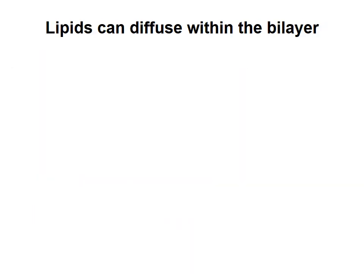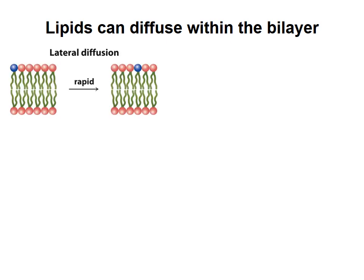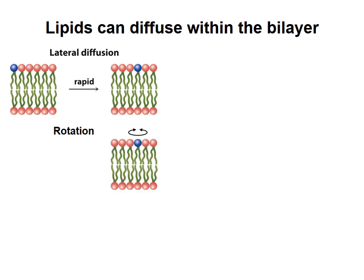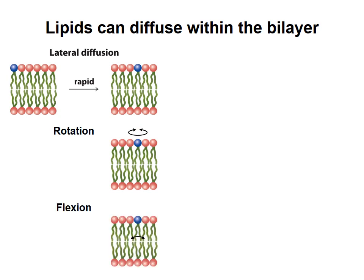Lipid bilayers are said to be fluid because individual lipid molecules are not fixed in position, but can move and diffuse within the bilayer. For example, lipids can move laterally from one place to another in the plane of the bilayer. They can rotate or spin around an axis perpendicular to the bilayer. Rotation around carbon-carbon bonds in the hydrophobic tails causes bending or flexing of the tails. The greater the movement of lipids in the bilayer, the more fluid the bilayer is said to be.